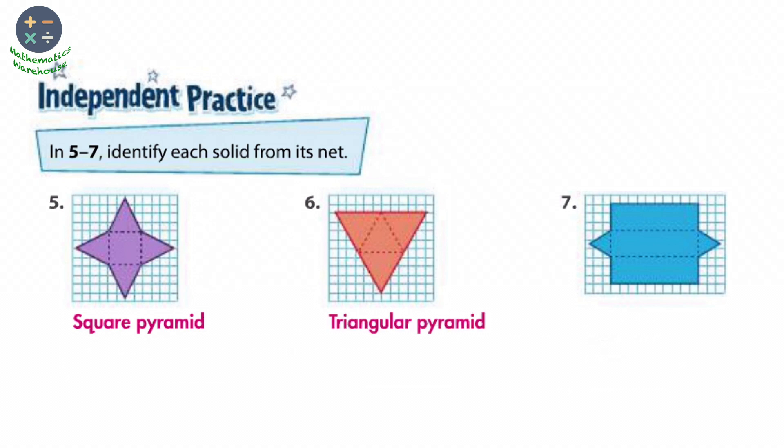Number seven, we have two bases, triangular shape. So we have a prism, a triangular prism.